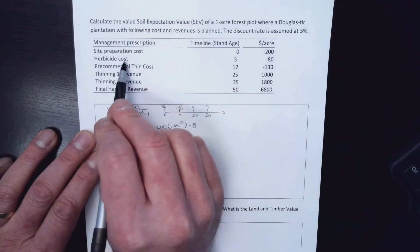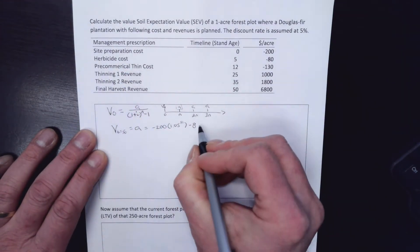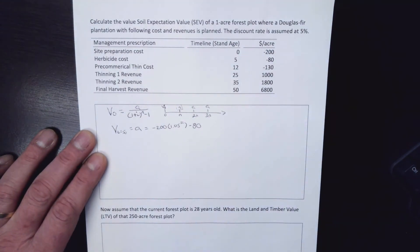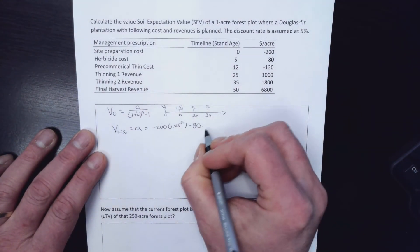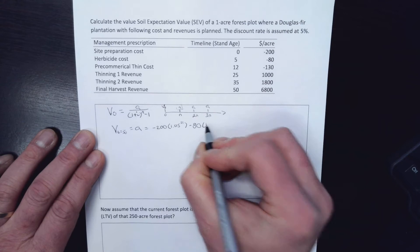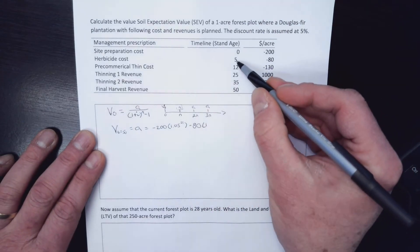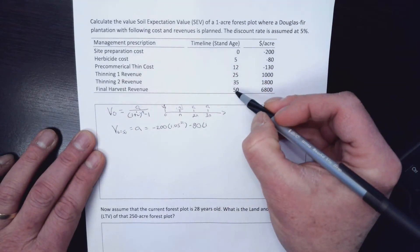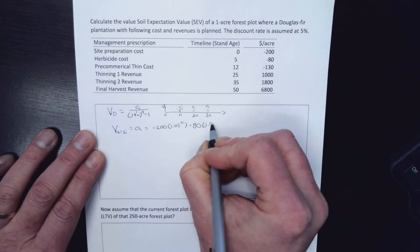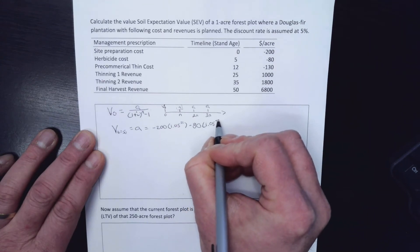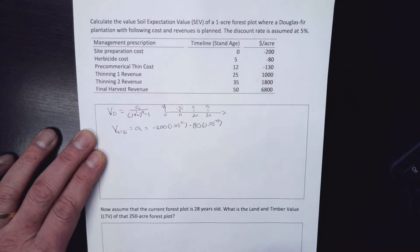Then I have an $80. I'm going to have my herbicide cost. Every time the stand is five years old, I'm going to apply herbicides to make sure that our trees are free to grow or whatever it is we're doing with them. But I need to move that one out. That one only needs to come 45 years out to the end. So 1.05 to the 45 gets it out at the end.